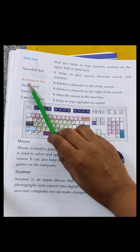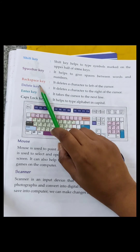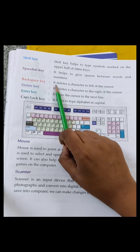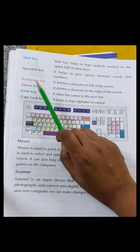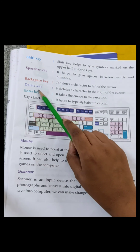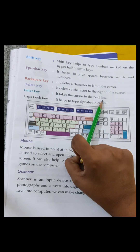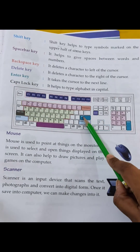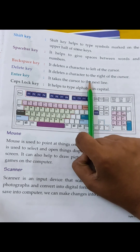Next is Backspace key. It deletes a character to the left of the cursor. Backspace में जो characters होते हैं उन्हें delete करता है. Next is Delete key. It deletes a character to the right of the cursor — जो चीज़ें हम लिखते हैं उन्हें easily delete कर सकते हैं. Enter key — it takes the cursor to the next line. जब हम Enter press करते हैं तो cursor next line में चला जाता है.